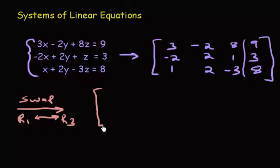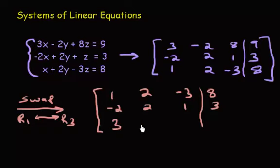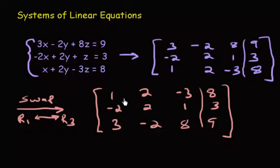So if we swap row one and row three, then we're going to have one, two, negative three, and eight. We didn't do anything to row two, so we'll leave that alone. And finally, row three becomes three, negative two, eight, and nine. Now we've done our first operation. Now what we want to do is turn these into zeros.